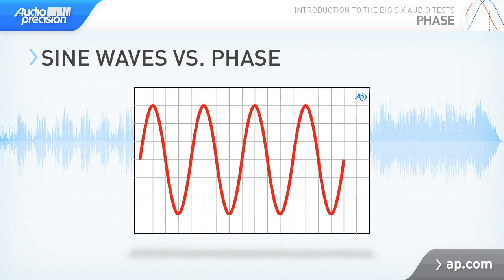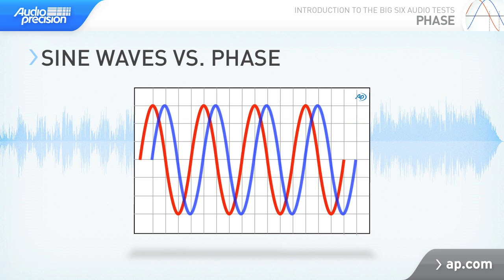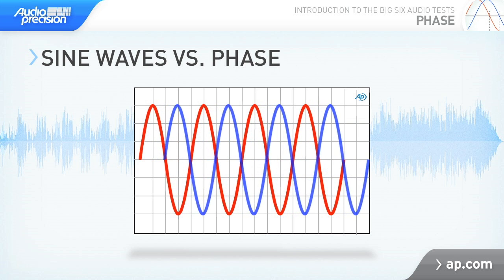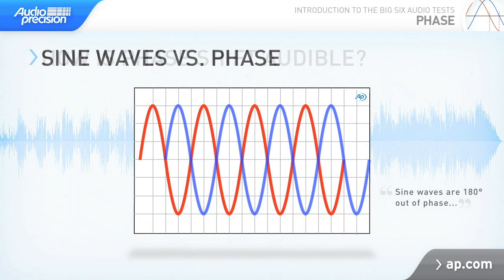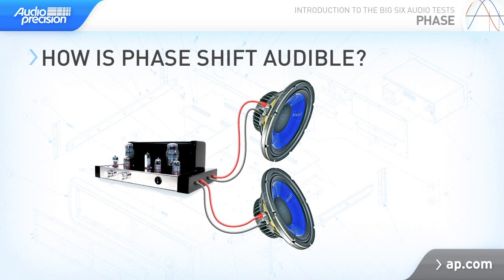Two sine waves of the same frequency are said to be in phase if their cycles begin at the same time. If one wave begins at a different time, the signals are said to be out of phase. Phase shift is often not audible unless the two or more channels in question are combined. In that case, there will be addition or subtraction of signal level, varying with frequency.